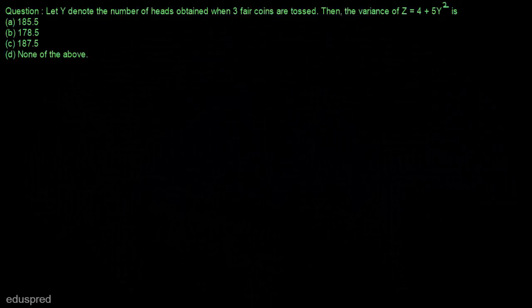In this video, I am going to solve this question. Let y denote the number of heads obtained when three fair coins are tossed. We have to calculate the variance of z, where z is equal to 4 plus 5y squared. These are the options given to us.